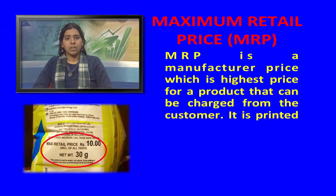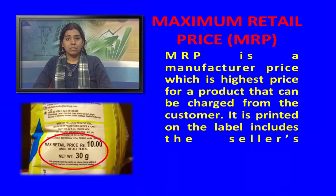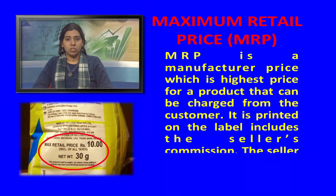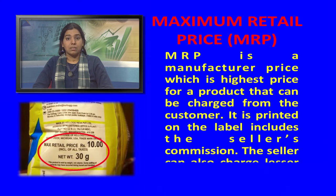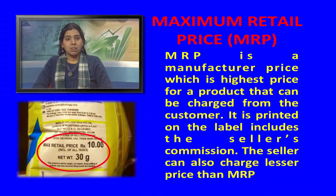Maximum Retail Price, that is MRP, is a manufacturer price which is the highest price for a product that can be charged from the customer. It is printed on the label and it includes the seller's commission. The seller can also charge less than the MRP.